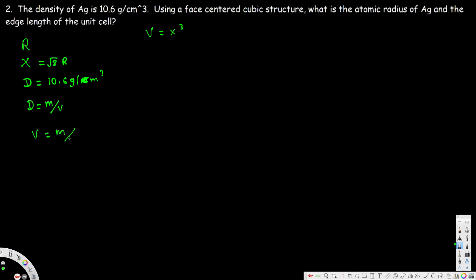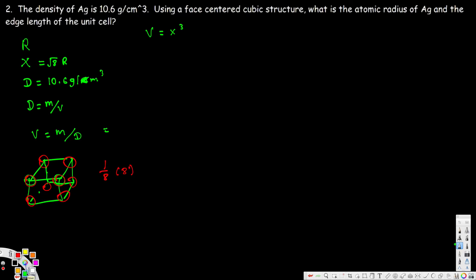Now let's find the mass. In a face-centered cubic structure, there are four atoms per unit cell. If I draw a cube for a face-centered cubic structure: each corner has one-eighth of an atom, and we have eight corners, so one-eighth times eight equals one. Each face center has one-half of an atom, and there are six faces, so six times one-half equals three. That gives four atoms per unit cell total.